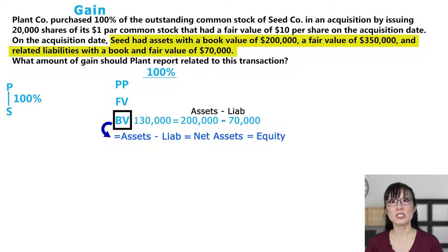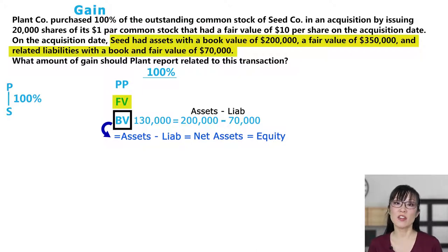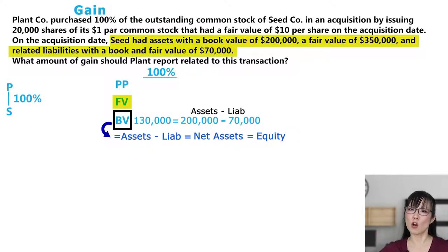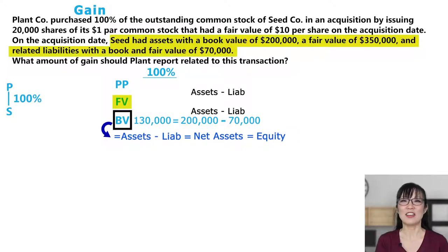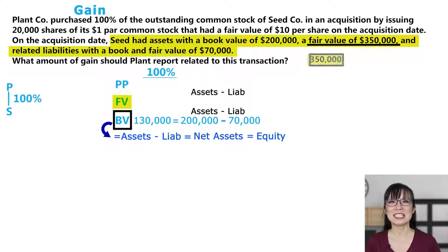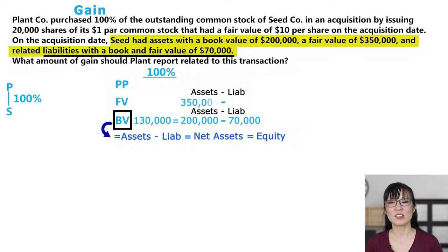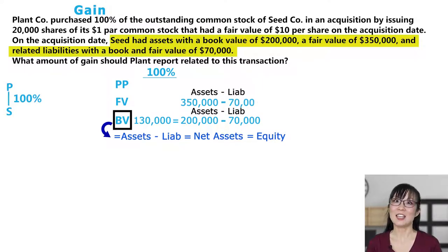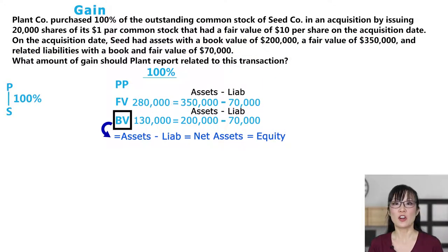Next, let's do Seed's fair value. Once again, they don't just give us the fair value of Seed — we have to work for it. Fair value of Seed's assets is $350,000, less fair value of Seed's liabilities is $70,000, and that equals $280,000.